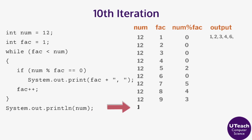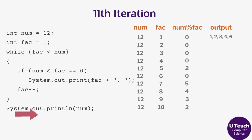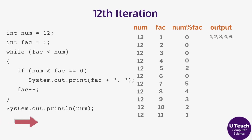For the tenth iteration, fact is less than num so the body of the loop executes. Since 12 mod 10 is 2, the if statement does not execute and there is no output. Fact is incremented to 11. For the eleventh iteration, fact is less than num so the body of the loop executes. Since 12 mod 11 is 1, the if statement does not execute and there is no output. Fact is incremented to 12. For the twelfth iteration, fact is not less than num, so the loop ends. The print statement after the loop executes and the output is 12.